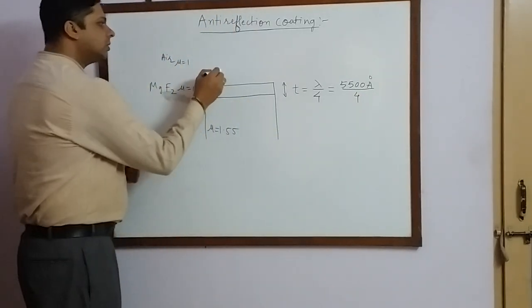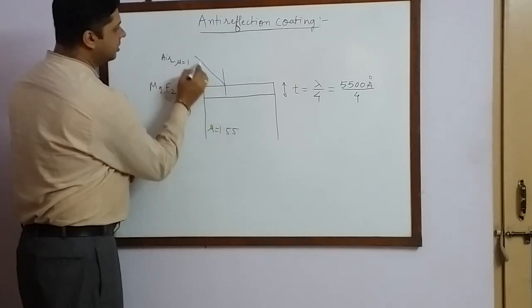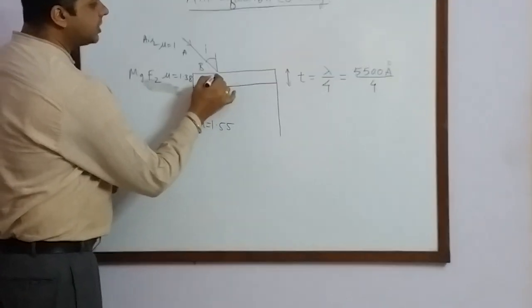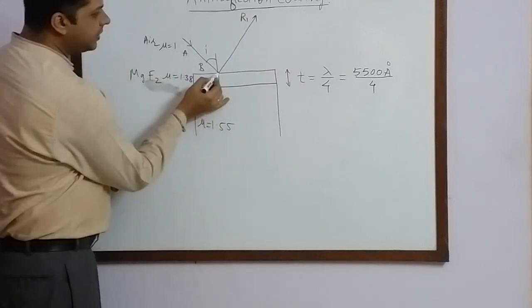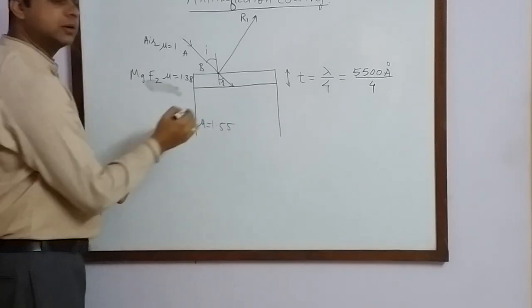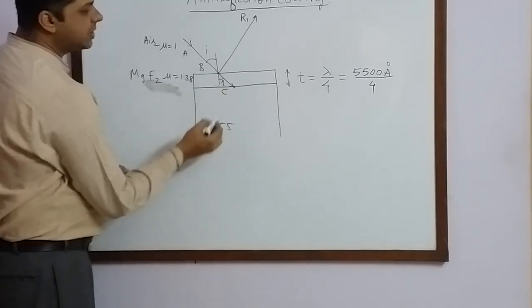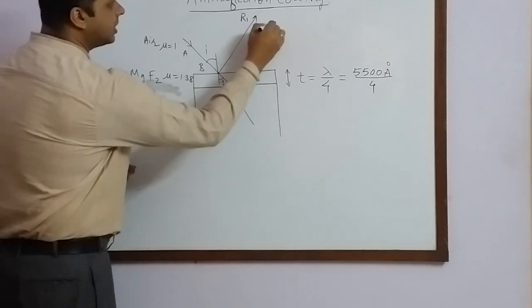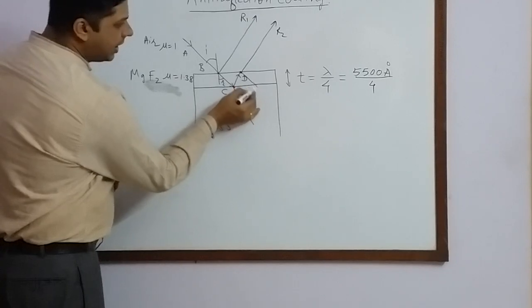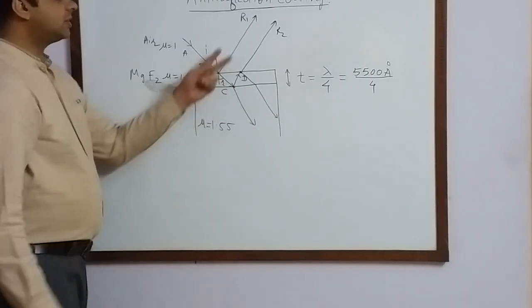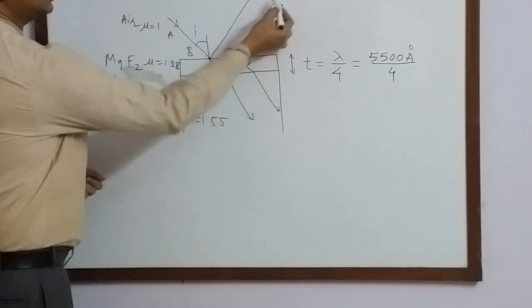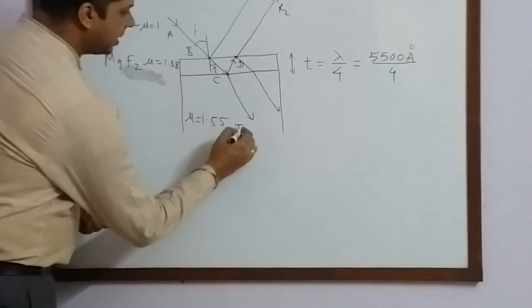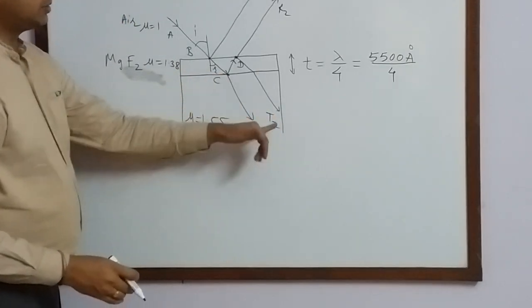With this setup, assume that a beam of light AB is incident with some angle of incidence i. On reaching point B, part of the incident light is reflected and emerges as ray 1. Part of it is refracted through the film of MgF₂ with some angle of refraction R, along BC. On reaching point C, part is transmitted and part is reflected along CD. On reaching point D, we obtain reflected rays DR1 and DR2.